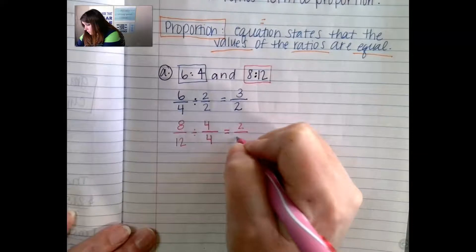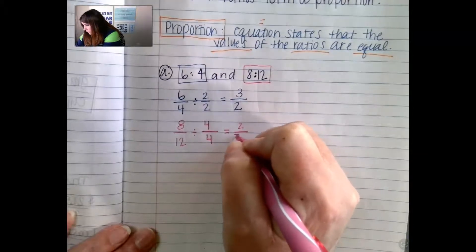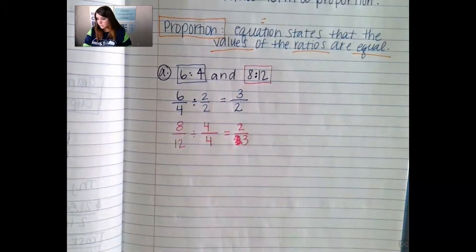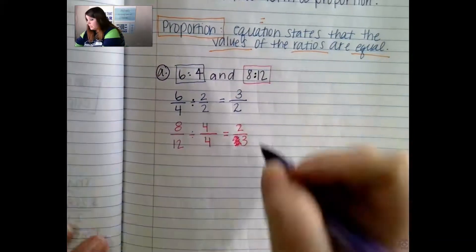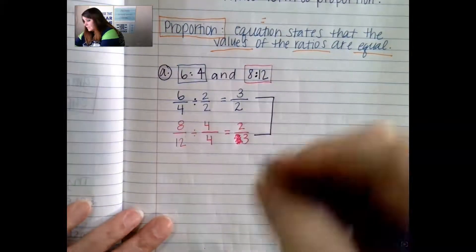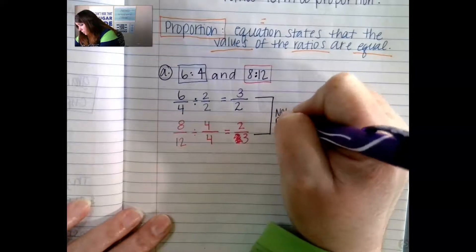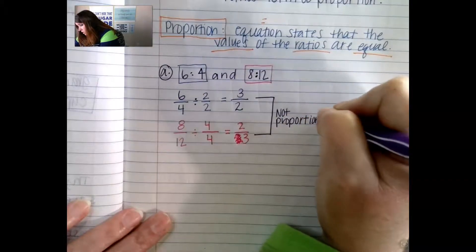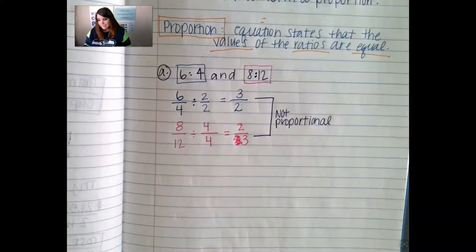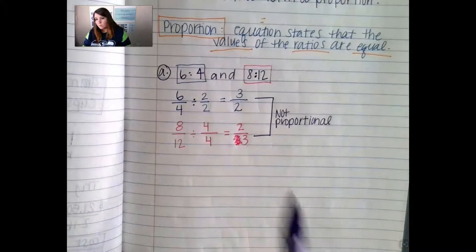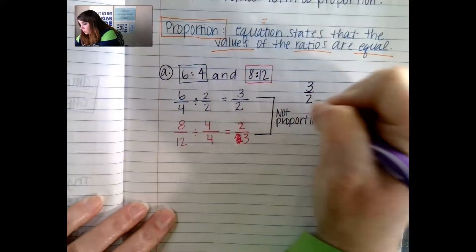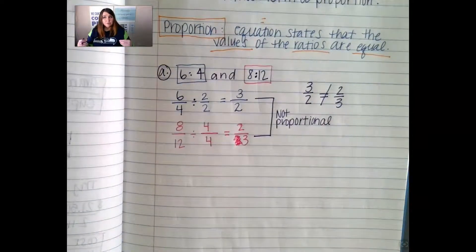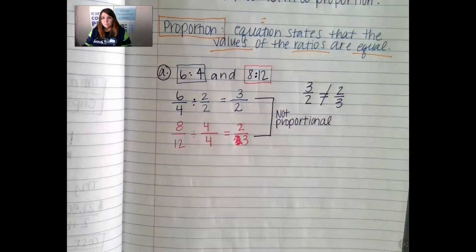I have to divide both top and bottom by 4 so that they are equivalent. So 8 divided by 4 gives me 2, and 12 divided by 4 gives me 3. So we have 2 thirds. And that first one was 3 over 2. This is not proportionate — it's not a proportional relationship because these two ratios are not equal. 3 over 2 is not equal to 2 over 3. Their values are not equal, so they're not proportional.